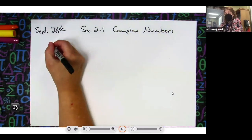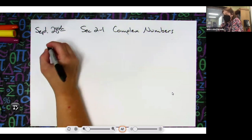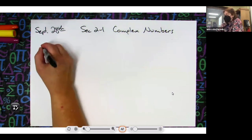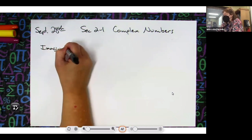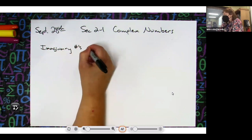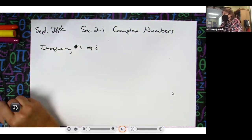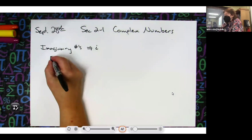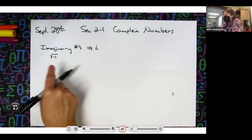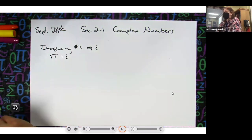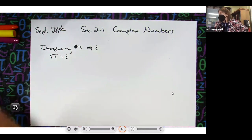Okay, so complex numbers — we all know there's going to be an i in these, because we remember from Algebra 2 that complex numbers involve an imaginary part. Imaginary numbers involve having an i in the number. Probably the two main things you need to remember involving i: a square root of a negative one gives you an i. So anytime you have a negative number under a radical, you can factor out the square root of negative one and pull out an i.